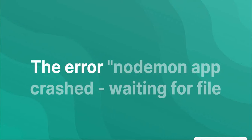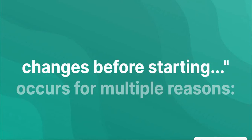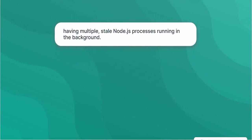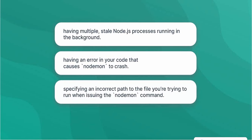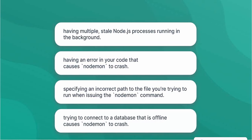The 'app crashed, waiting for file changes before starting' error occurs for multiple reasons: having multiple stale Node.js processes running in the background; having an error in your code that causes Nodemon to crash; specifying an incorrect path to the file you're trying to run when issuing the Nodemon command; or trying to connect to a database that is offline, which causes Nodemon to crash.